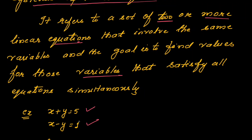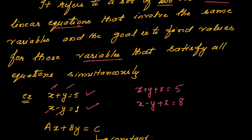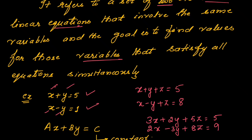For example, these are two linear equations involving the same variables x and y. It can also be three variables: x plus y plus z equal to 5, x minus y plus z equal to 8. The equations have the same variables, and they may also have coefficients — like 3x plus 2y plus 5z equal to 5, and 2x minus 3y plus 8z equal to 9.